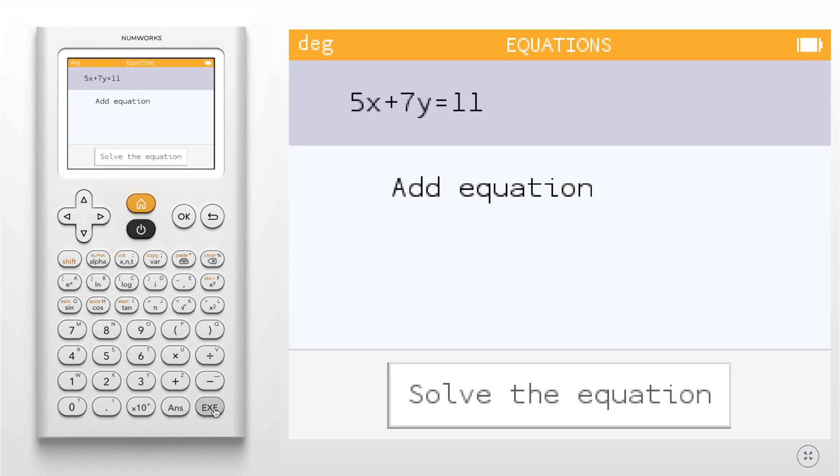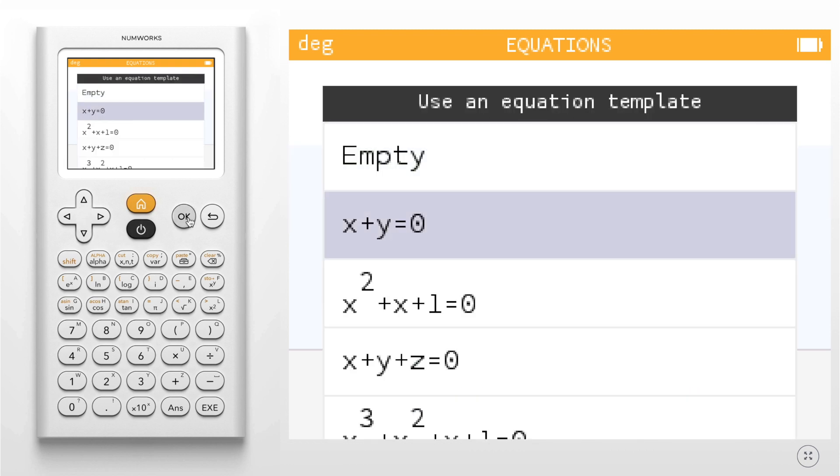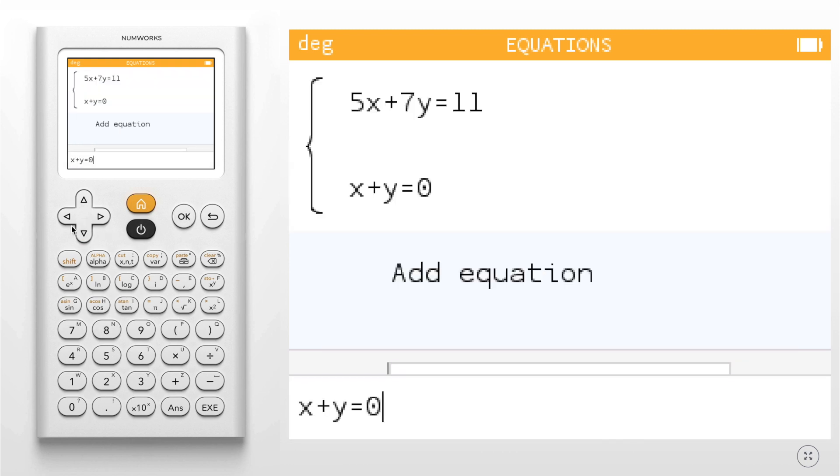I'm going to hit enter and for my second equation, I'm going to select the same template, hit OK and modify that to read 2x plus 6y equals 19.